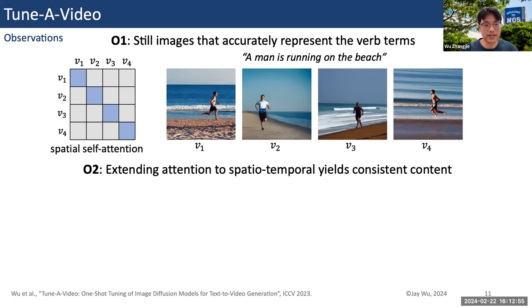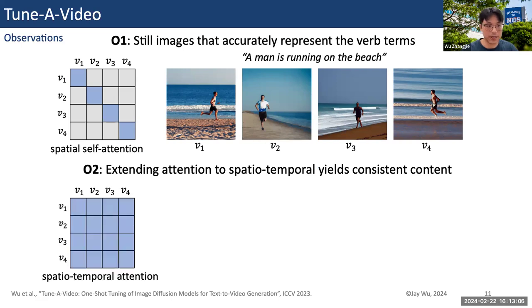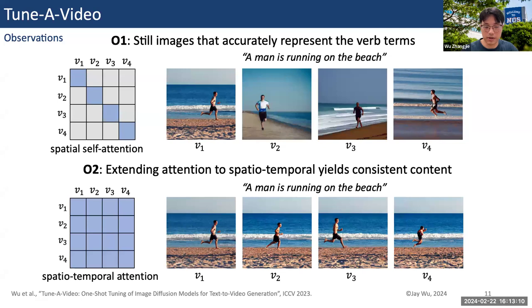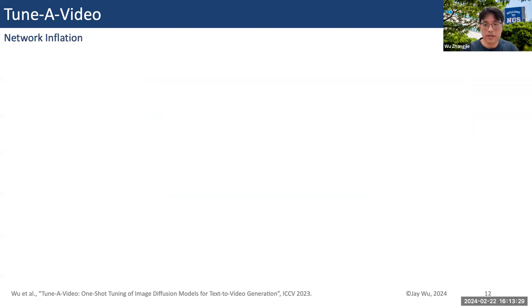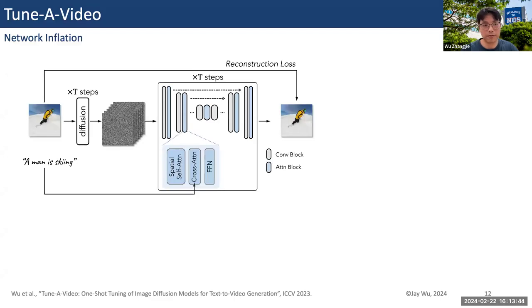But if we extend this spatial self-attention to spatial-temporal, this can actually create consistent content across the temporal space. Here we have a man running on the beach with consistency in terms of content, but you can still see that the man moves forward and back — there is no continuous motion with individual frames. To learn this kind of motion, we need a reference video and also a network that can do temporal modeling. So we inflate the original stable diffusion to the temporal domain.